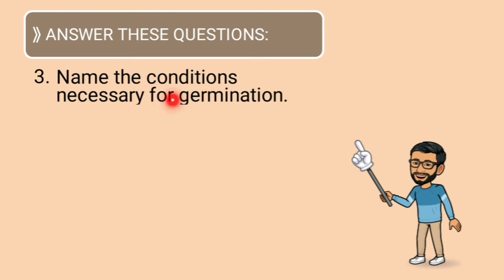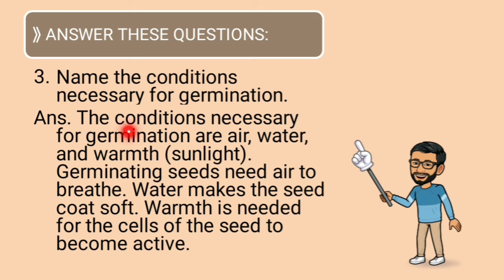Name the conditions necessary for germination. The conditions necessary for germination are air, water, and warmth — you can also write sunlight. Germinating seeds need air to breathe, water makes the seed coat soft, and warmth is needed for the cells of the seed to become active and gives energy.